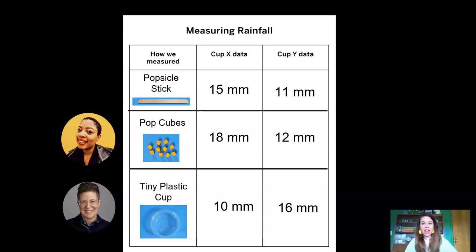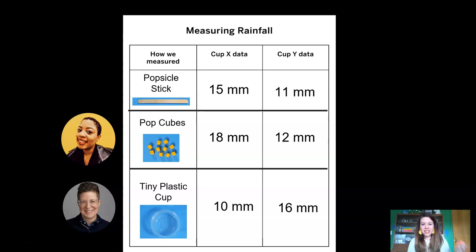Now let's look at cup Y. You didn't even have to guess — it was Brooke. She had 16 millimeters, where Moshari only had 12 and I only had 11. See how much easier it is to compare when we measure everything in a standard measurement?